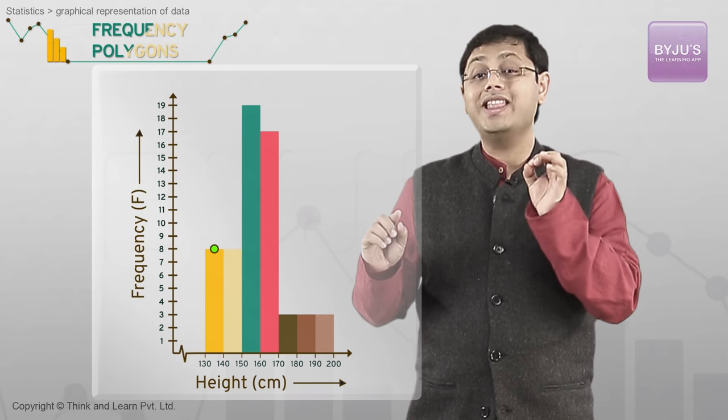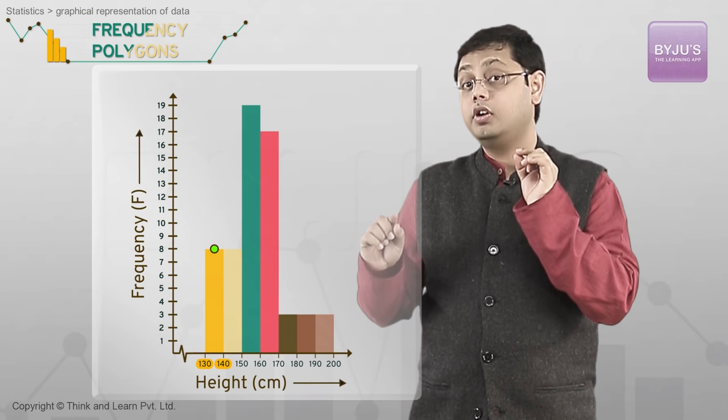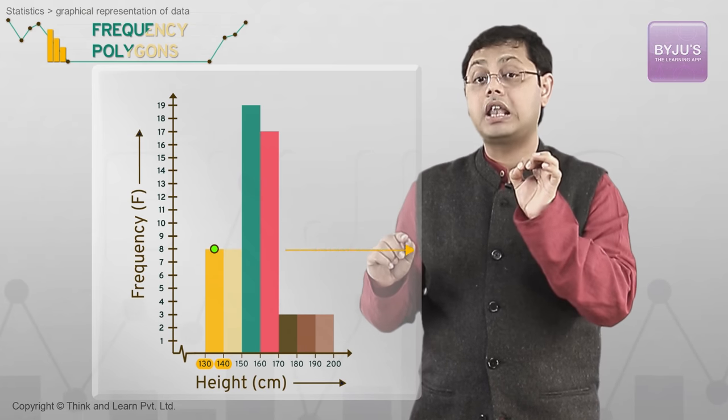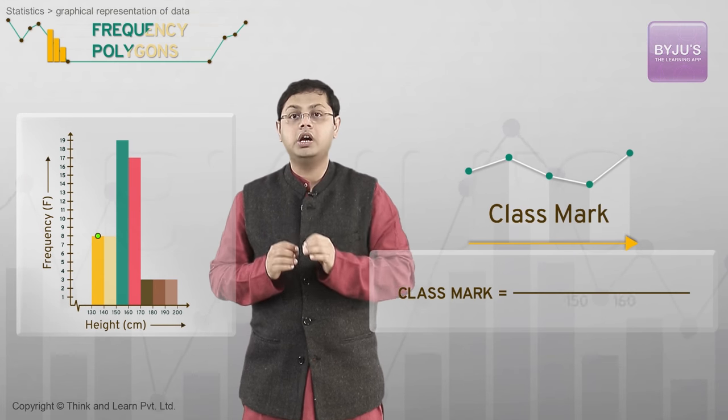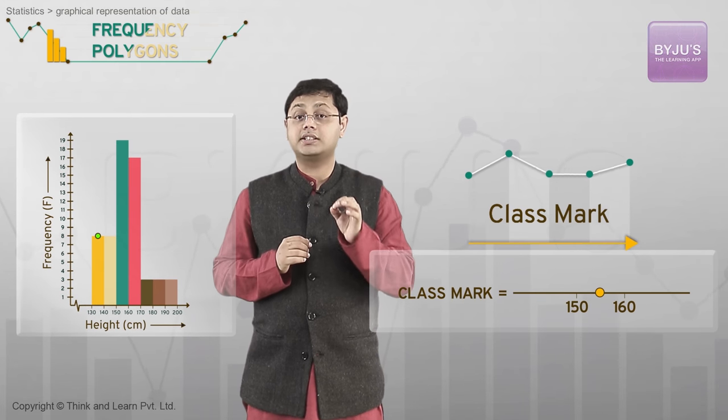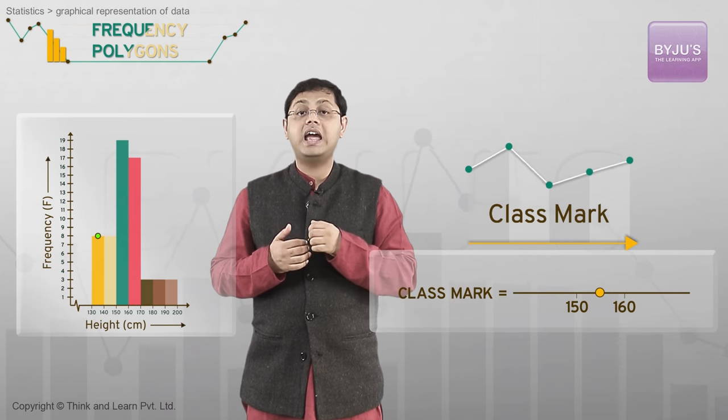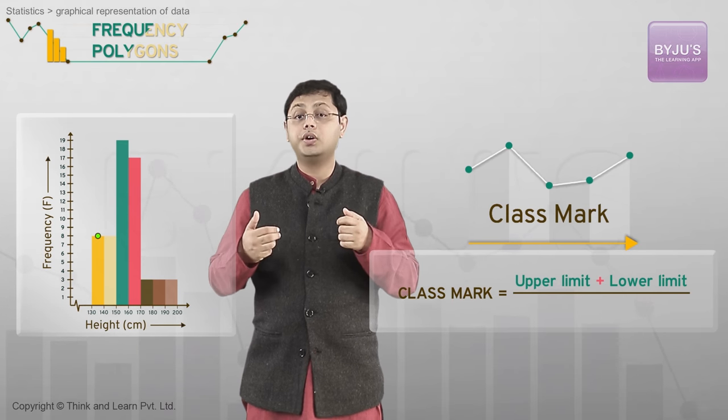I will call this point as the class mark. So class mark is a mathematical way of saying midpoint of class interval, which we obtained by adding the upper and lower limits of a class and dividing it by 2.